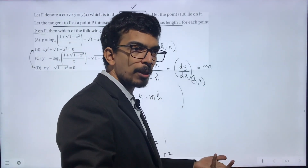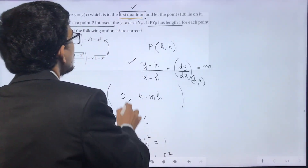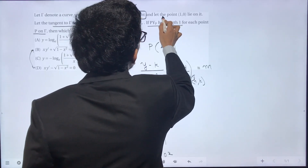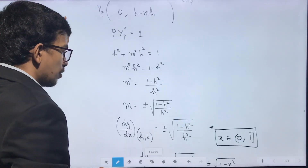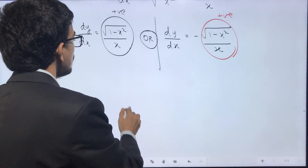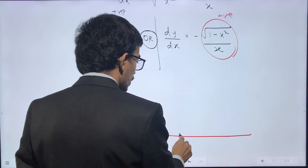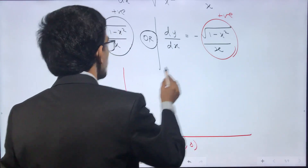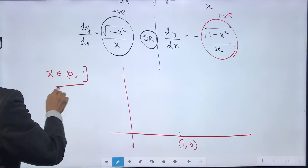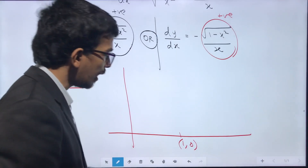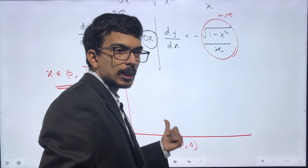Both options may be possible since this is a multiple-correct question. However, there is another condition not yet used: the point (1, 0) lies on the curve. The domain of the function is (0, 1), and the curve passes through (1, 0).